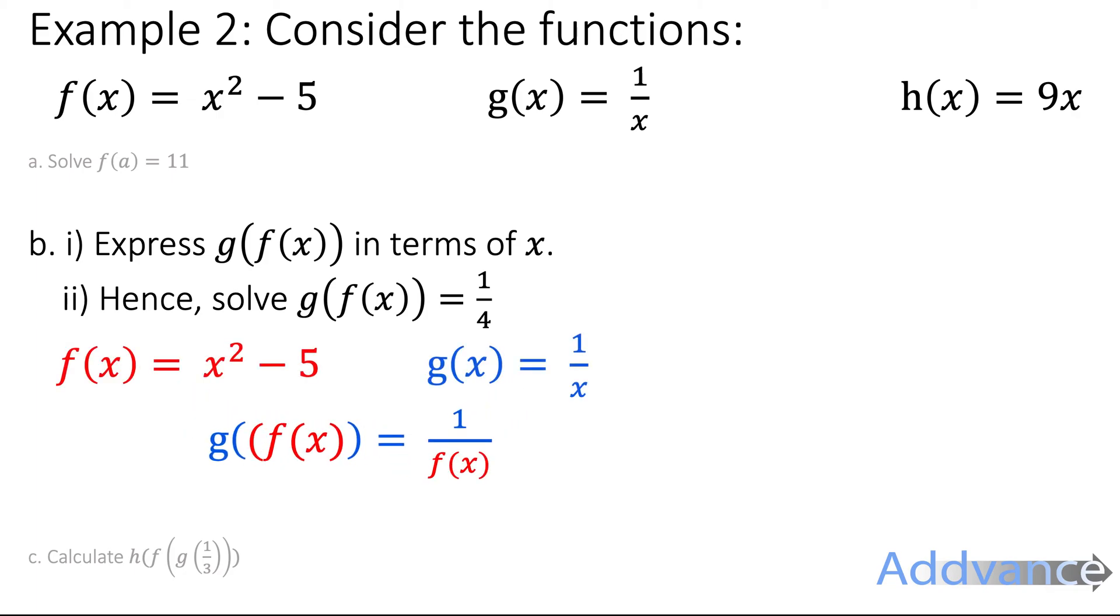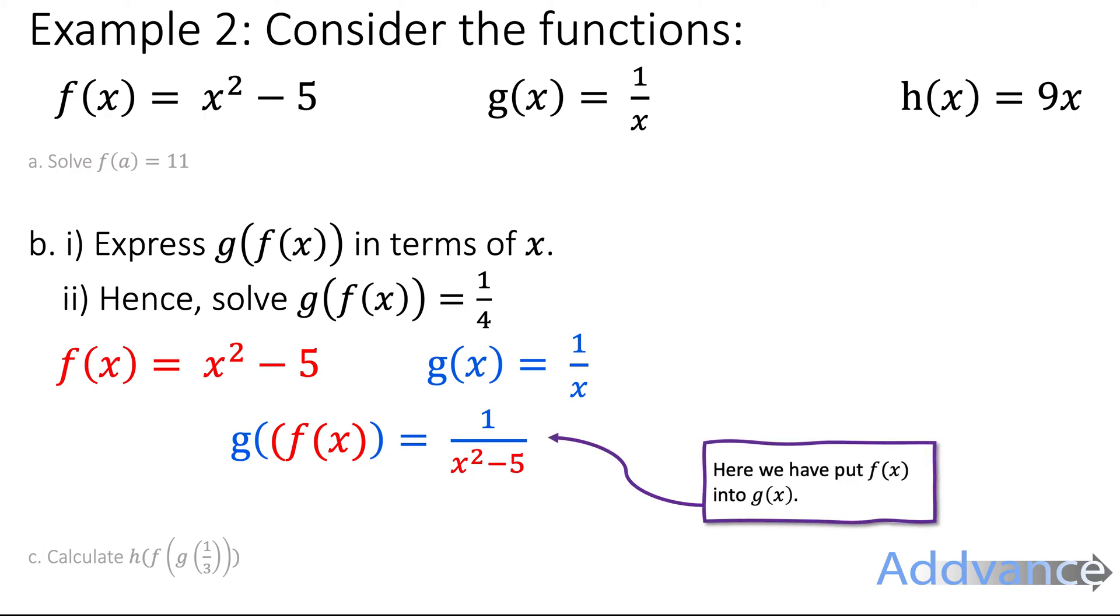Like this. So g of x is 1 over x, but we just replace the x with f of x. And remember f of x is x squared minus 5. And that's it. So we've wrote g of f of x in terms of x. And again, all we did was put f of x into g of x.